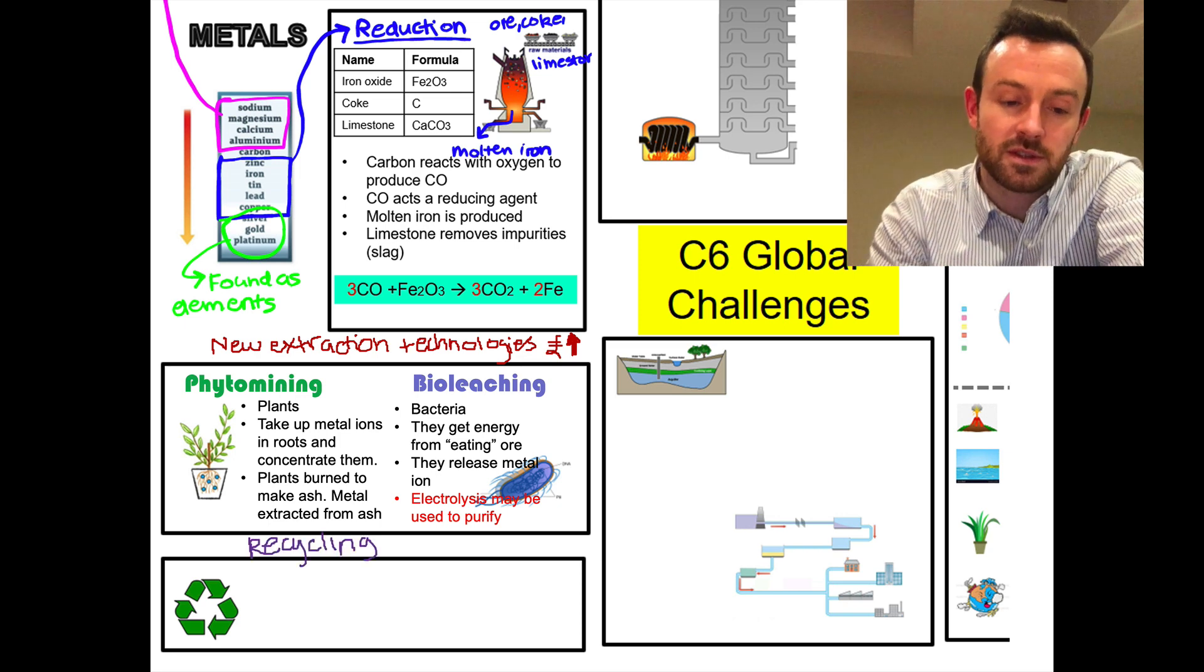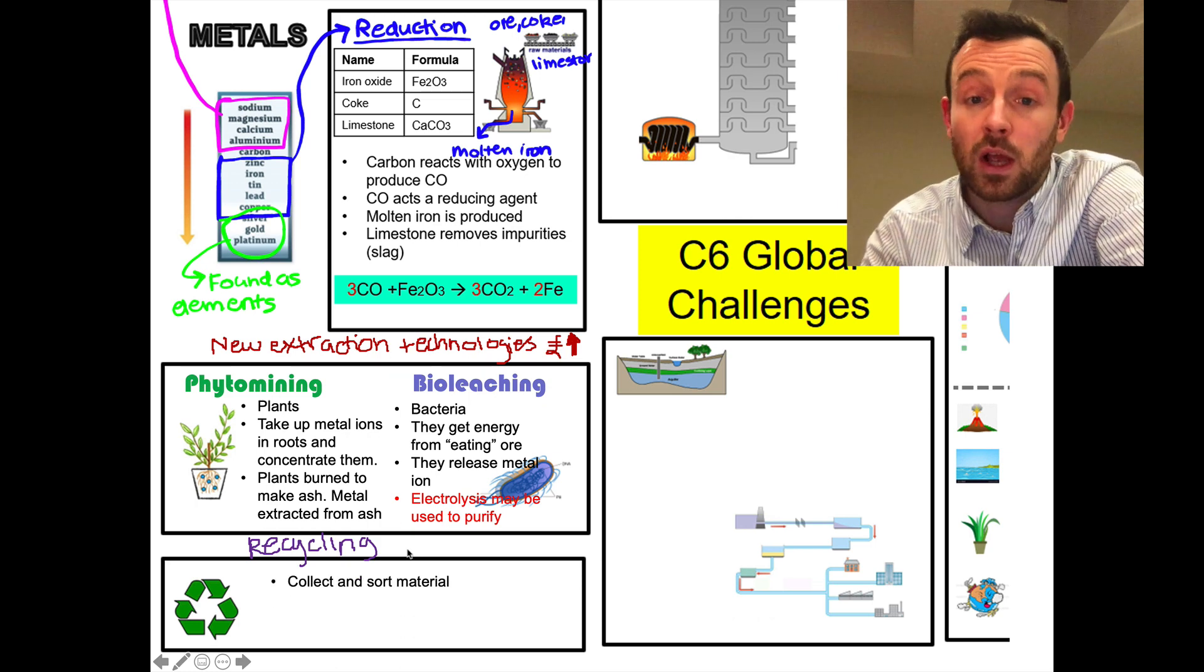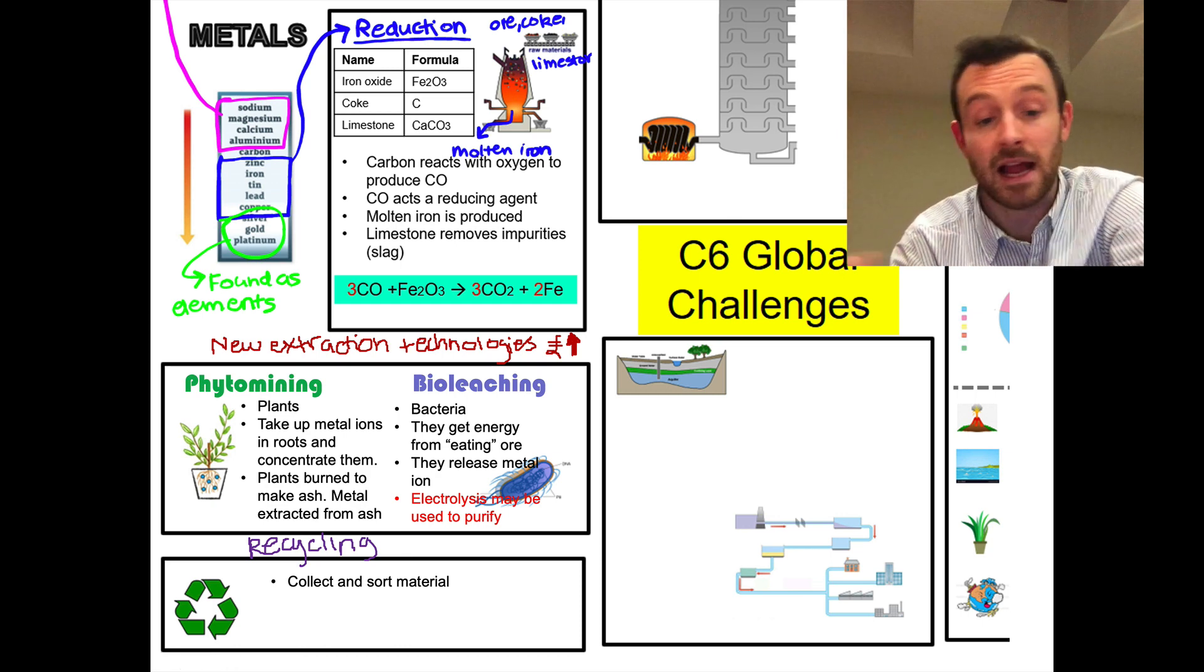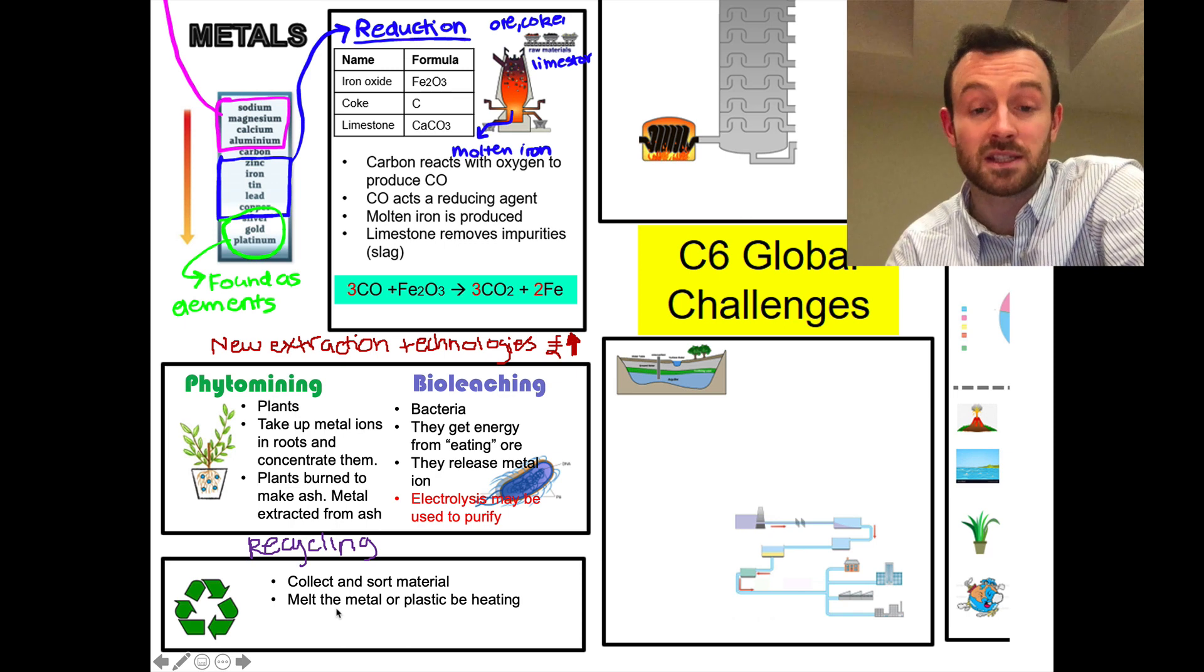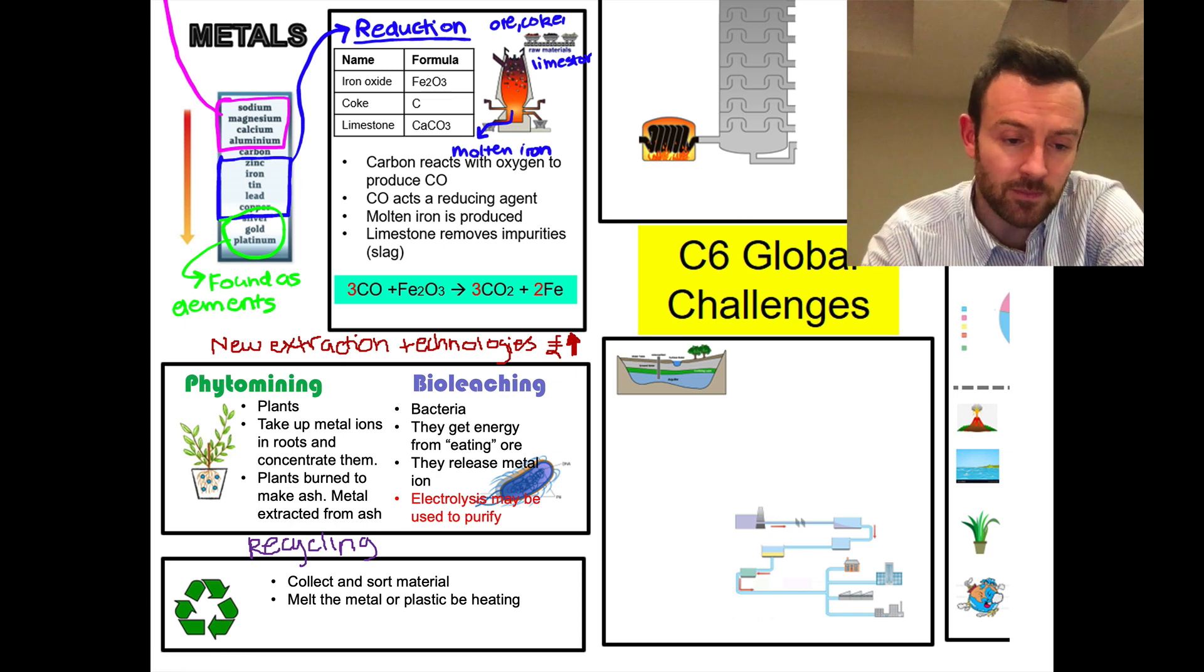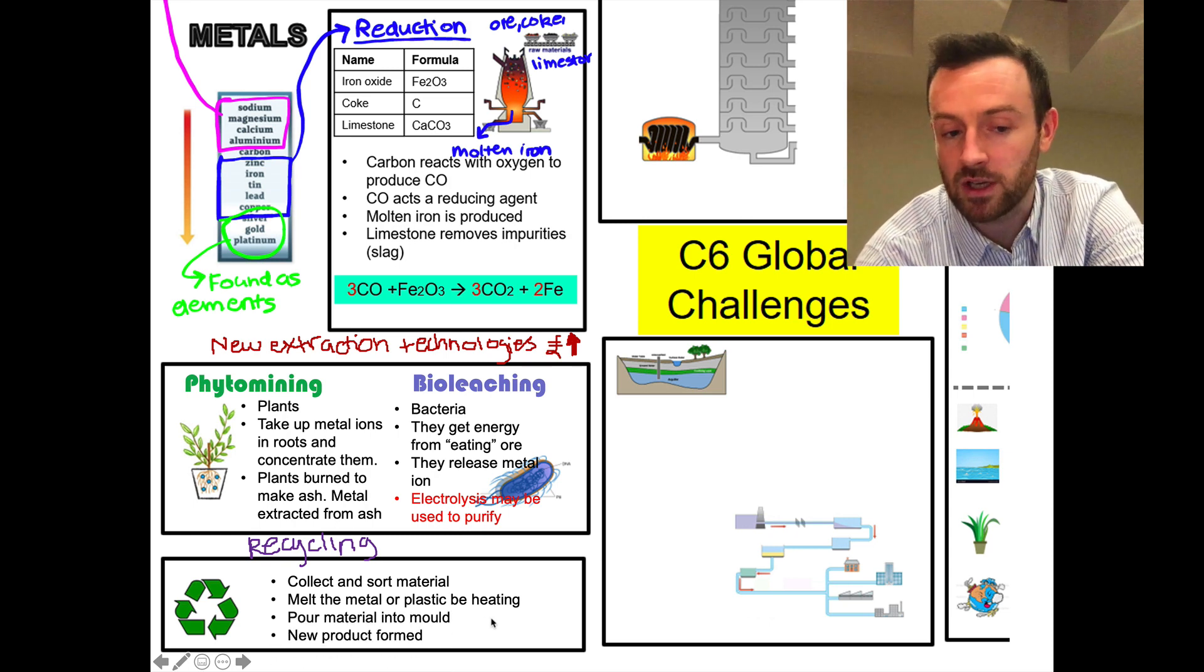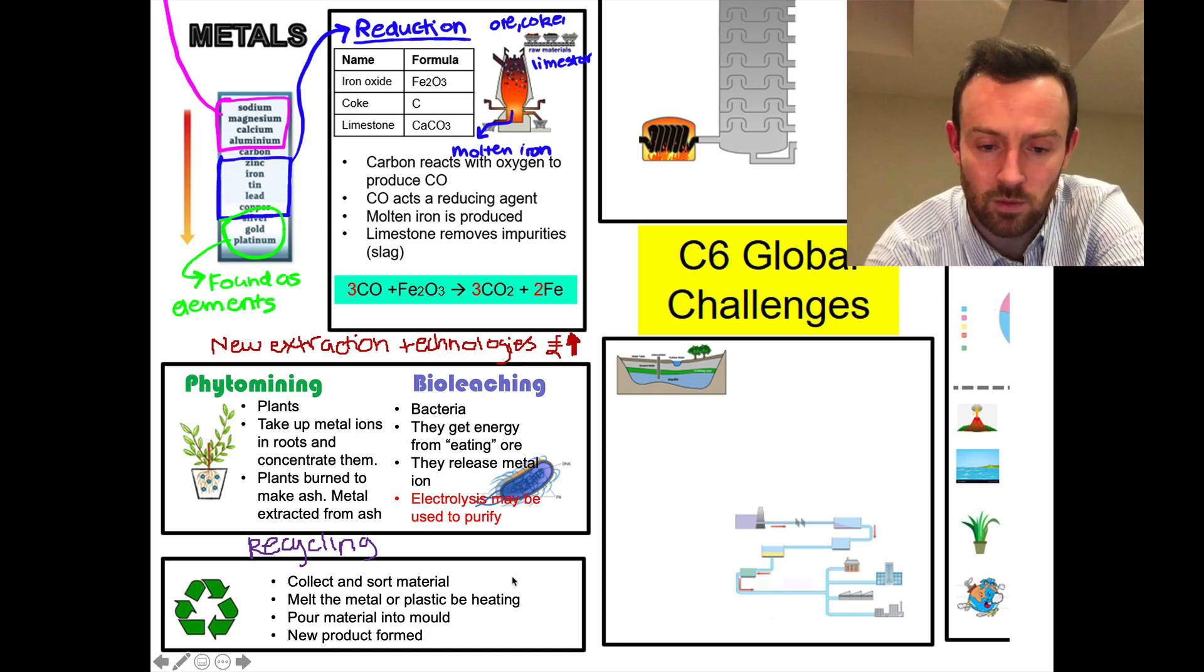The other thing, instead of mining new metals and getting them out of the ground, we can of course recycle metals. When we recycle metals, really we have to first of all collect and sort the material, so sorting into plastics and different metals like aluminium and steel. Then we have to melt the metal or plastic by heating, so we melt it until it's a liquid. And then we can reform it by pouring it into a mold and forming a new product. So that's recycling.